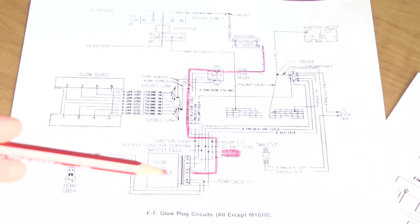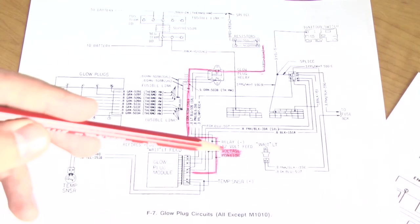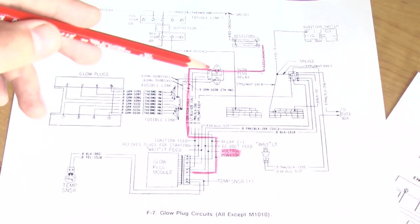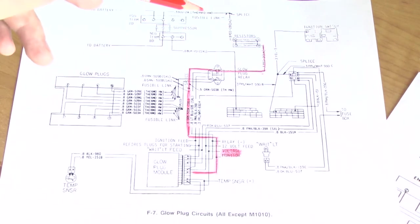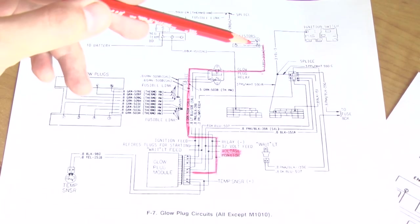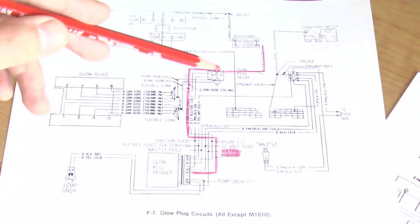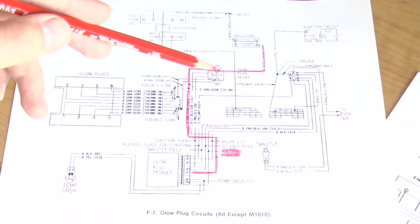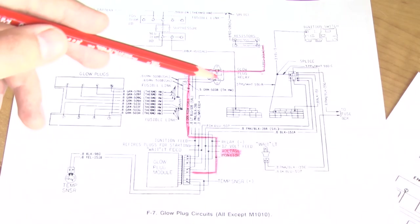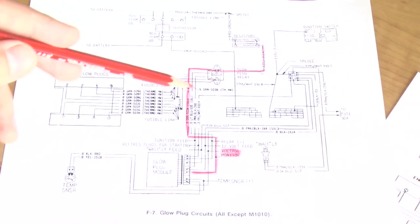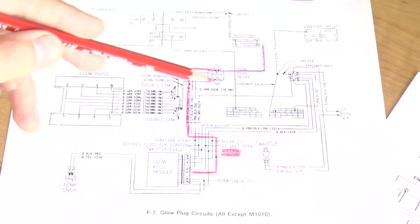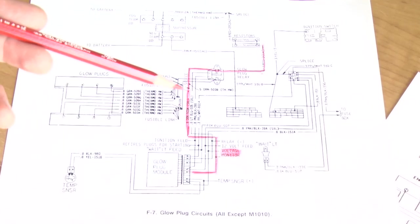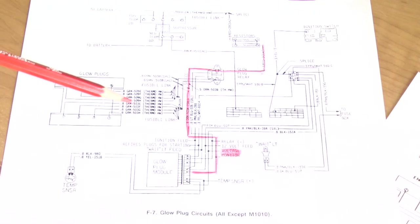But in this diagram, which is the one you are most likely to find, it shows that it is monitoring power from the same side of the relay as the incoming power. So the power comes from the batteries, through the resistor on the firewall, and then right to the relay. That's correct, but the voltage monitor circuit does not tap off from the same side of the relay. It actually connects to the other side of the relay, the same place where the glow plugs connect. So it is a small orange wire coming from the glow plug module, and it goes on the same relay post as the large orange wire going to the glow plugs.